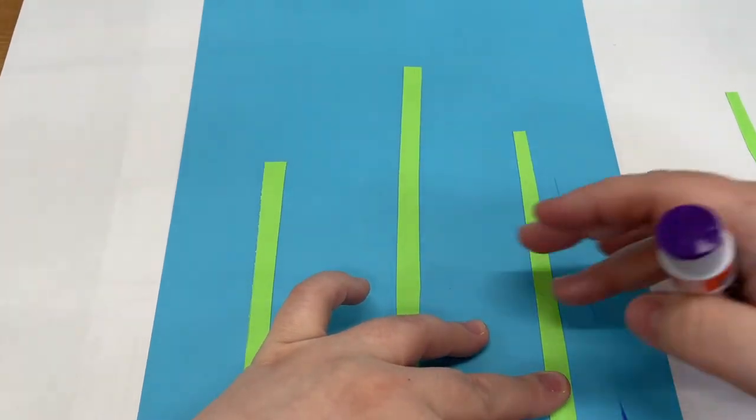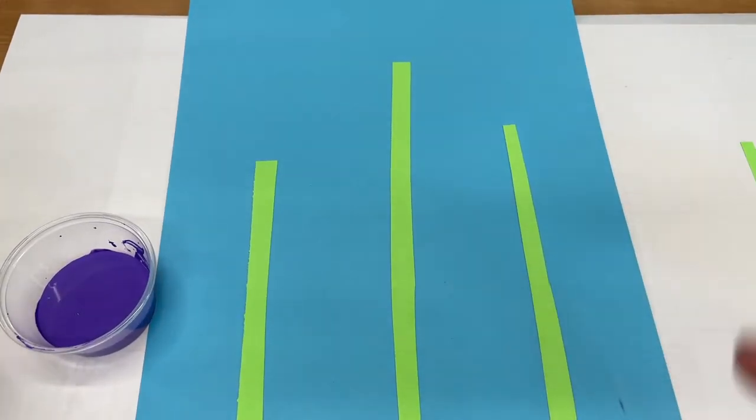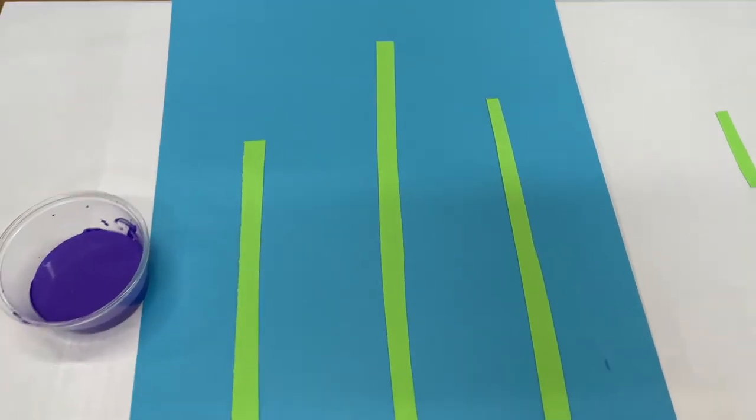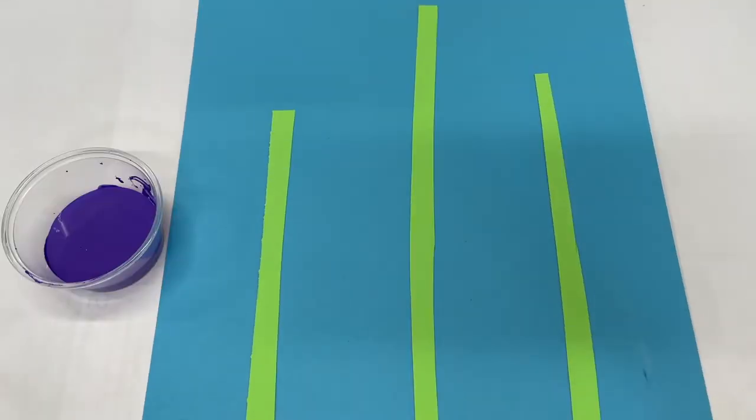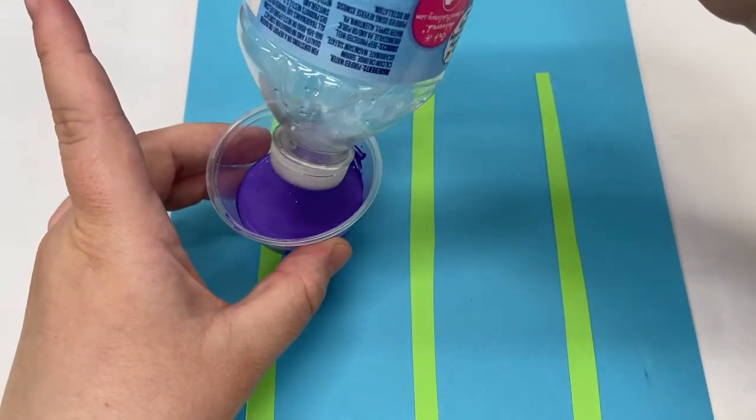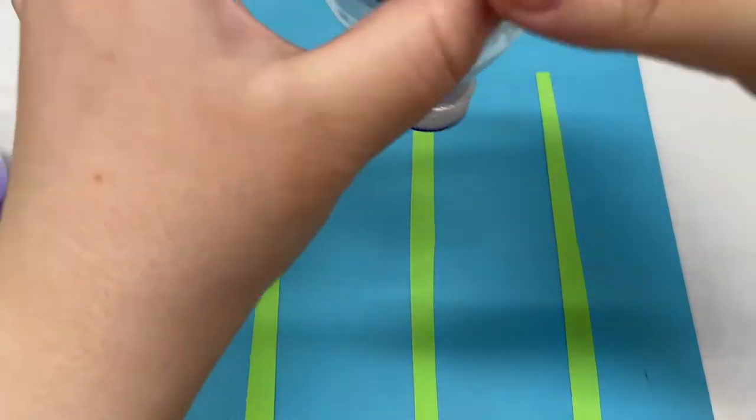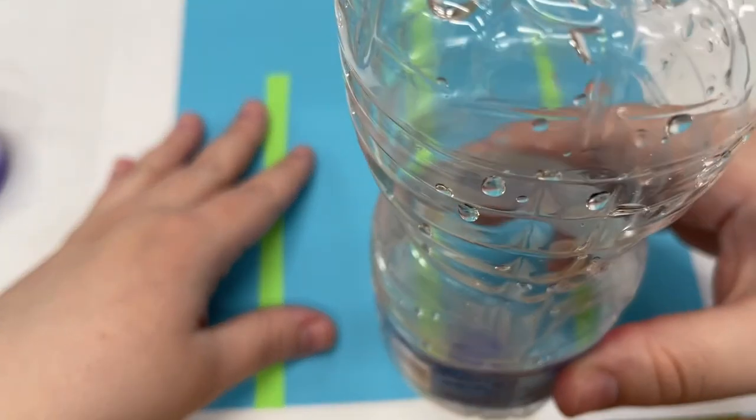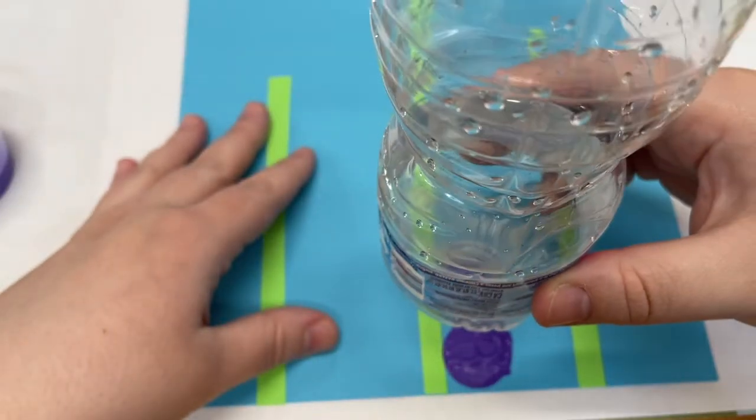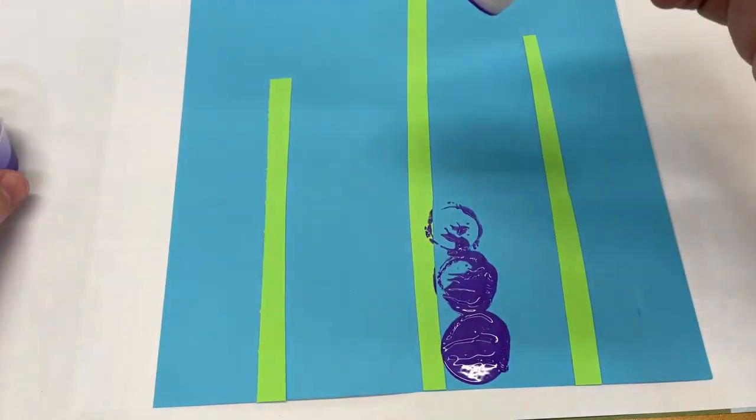Once they're all glued, this is where the fun part we get to start painting. So what we're going to do is we're going to take our bottle and we're going to dip it and you want to try to dip it as lightly as possible, kick off any extra, and then we're going to use this to do circles up the sides of the stems.